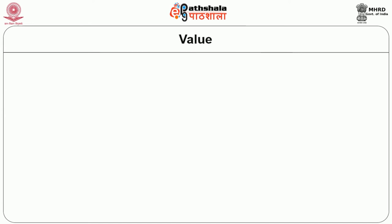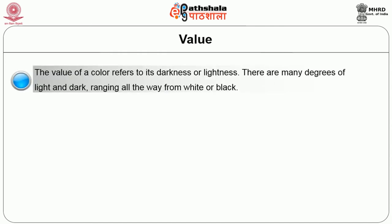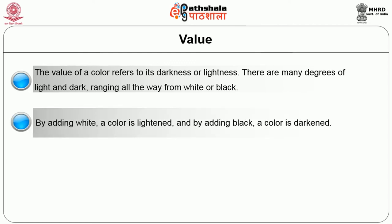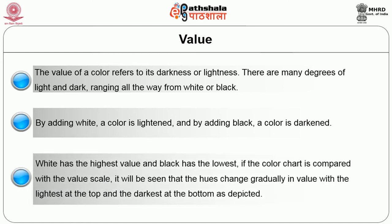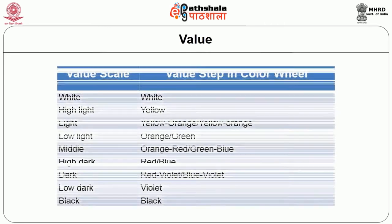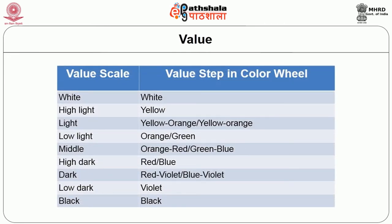The second dimension is value. The value of a color refers to its darkness or lightness. There are many degrees of light and dark ranging all the way from white to black. By adding white a color is lightened, and by adding black a color is darkened. White has the highest value and black has the lowest value. If the color chart is compared with the value scale, it will be seen that the hues change gradually in value, with the lightest at the top and the darkest at the bottom. The value scale steps include: white, high light (yellow light).